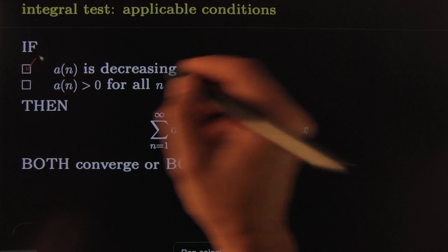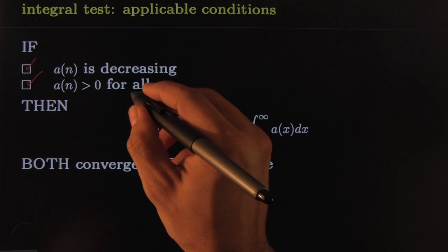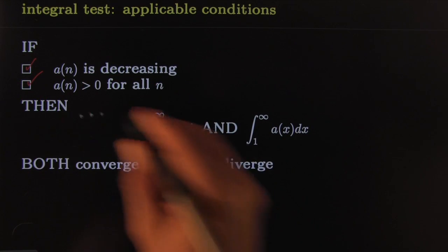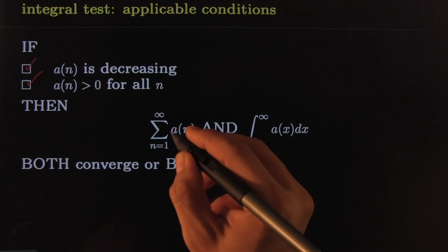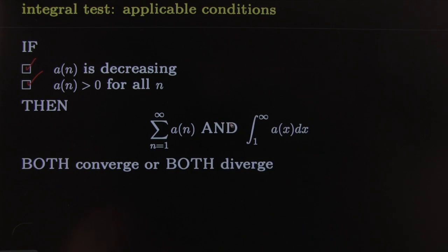...that the corners don't matter - that is, decreasing - and you can check that they're all positive, you're done. You can comfortably say that whatever the integral does, the series will do exactly the same thing. And those little corners, they don't matter. When that happens, those little corners will not matter at all.